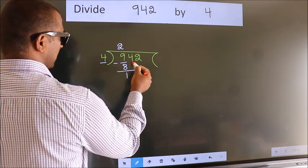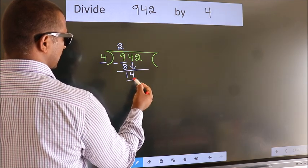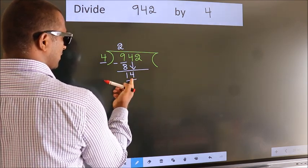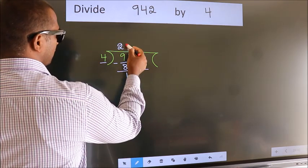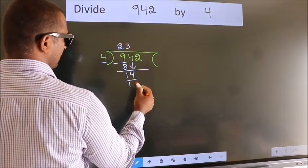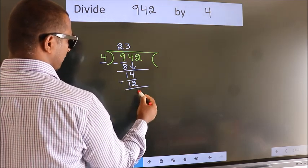After this, bring down the beside number. So, 4 down. So, 14. A number close to 14 in 4 table is 4 threes, 12. Now we subtract. We get 2.